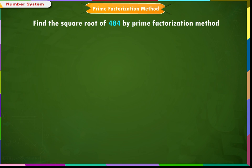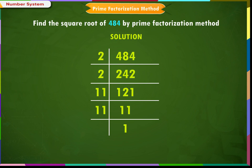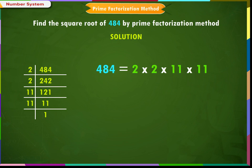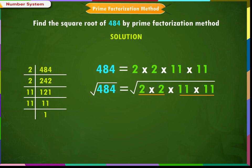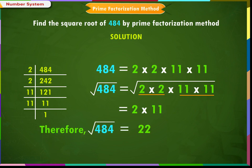Find the square root of 484 by the prime factorization method. Solution: Expressing 484 as the product of primes — divide 484 by 2 to get 242, which is even, so divide by 2 again to get 121. We know that 11 × 11 = 121. So, 484 = 2 × 2 × 11 × 11. Taking square roots on both sides, √484 = √(2 × 2 × 11 × 11) = 2 × 11. Therefore, √484 = 22.